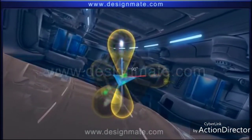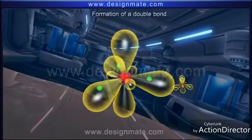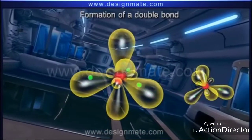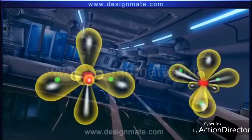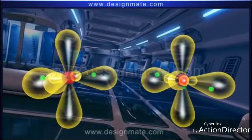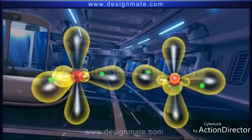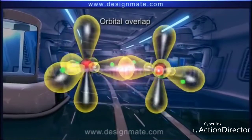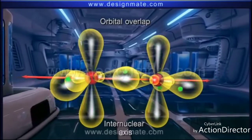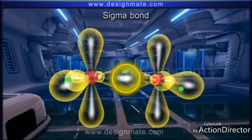Now let us understand how this hybridized state results in the formation of a double bond. For this, imagine a similar sp2 hybridized carbon atom approaching this carbon atom. As these atoms come closer, an orbital overlap takes place along the internuclear axis. This bond is called a sigma bond.